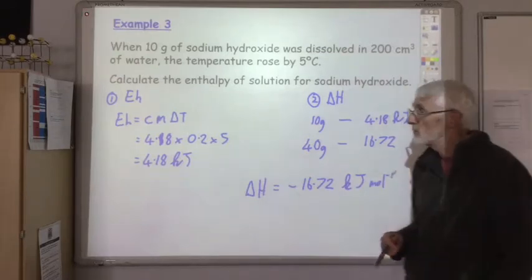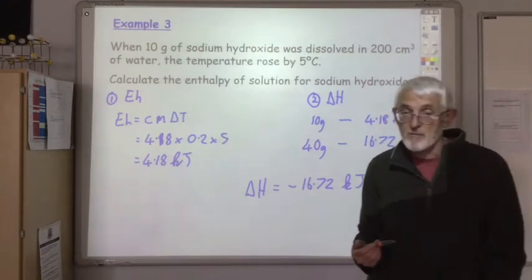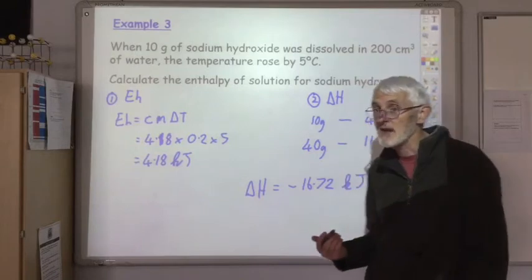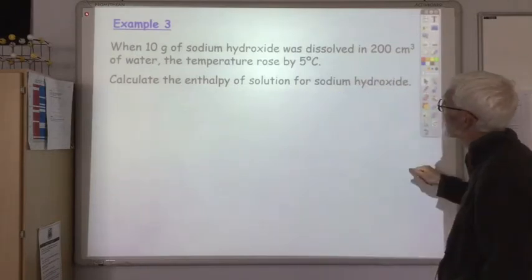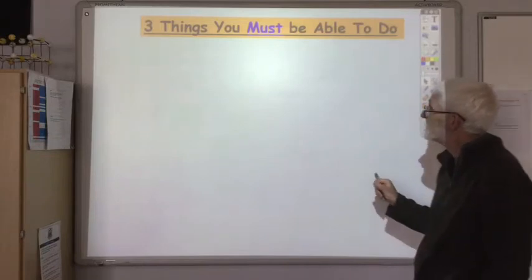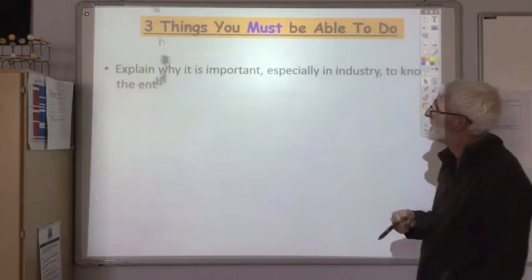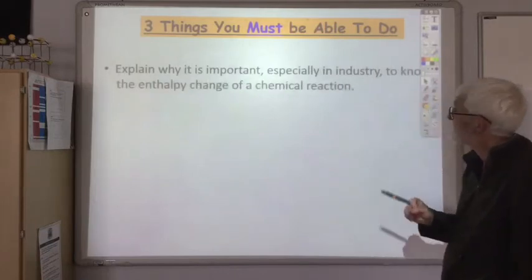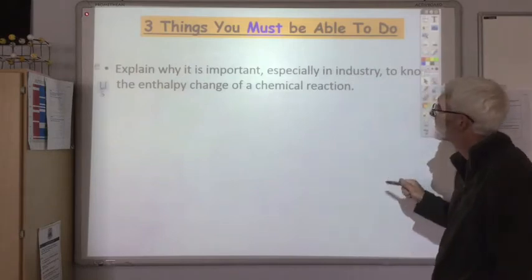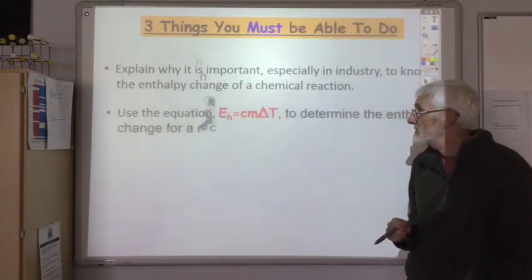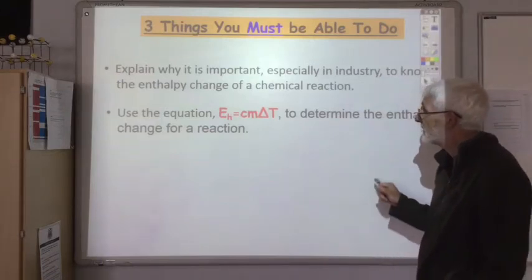Using EH = CM∆T we can work out the enthalpy values for many different chemical reactions. So three things you must be able to do: First, explain why it's important, especially in industry, to know the enthalpy change of a chemical reaction. Second, you should be able to use the equation EH = CM∆T to determine the enthalpy change for a reaction.